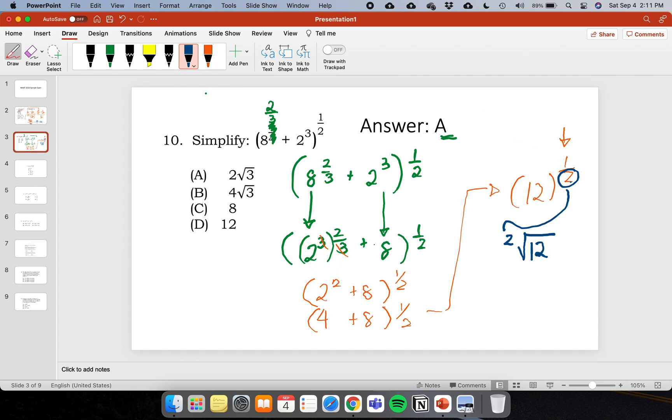So we have square root of 12. A fraction exponent means a radical. Square root of 12 is 4 times 3. We have square root of 4 and that is 2 and we are left with 3 inside.